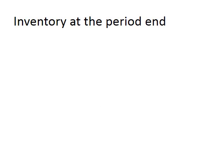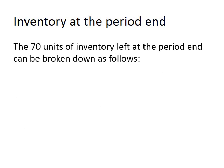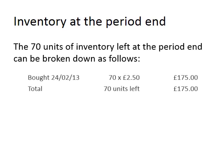When we look at our inventory at the period end, we can say that we have 70 units of inventory left. It's going to be valued as follows — it's all relating to the items bought on the 24th of February 2013: 70 units at £2.50 each, giving us a total value of £175.